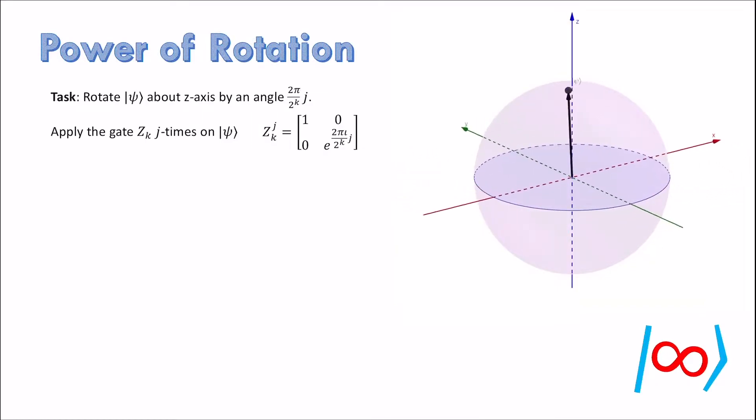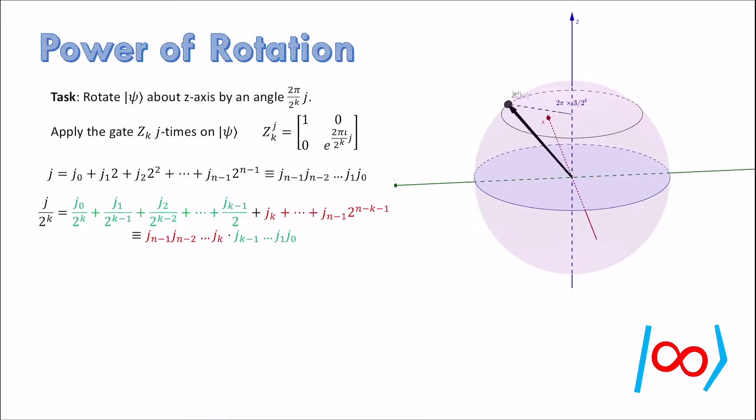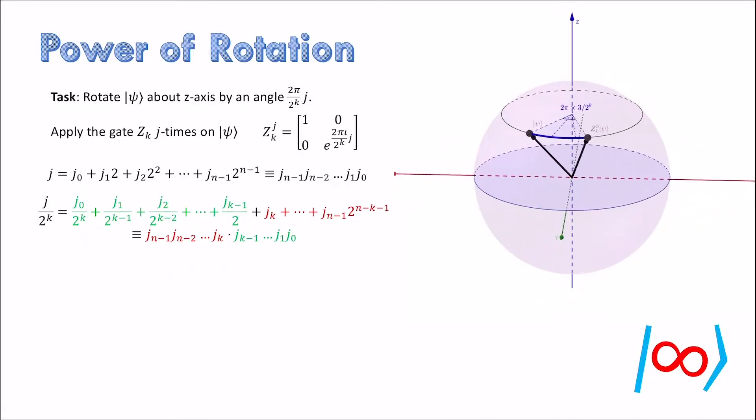But first, let us look at the binary expansion of j. Suppose j is an n-bit number. When we divide j by 2 power k, we can partition the terms in two parts. The green part contains fractional terms and the red part contains the integral terms. We can exploit the decimal representation to write binary fractional parts after a dot.